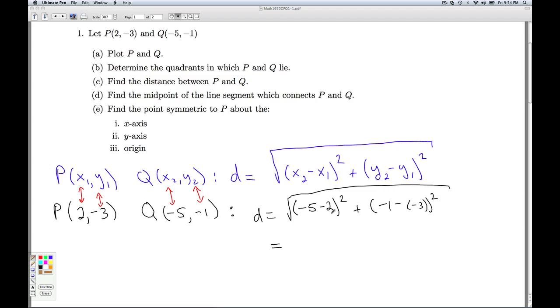So negative 5 minus 2 gives us negative 7. Negative 1 minus a negative 3 is the same as negative 1 plus 3, which is a positive 2. Negative 7 squared is 49. 2 squared is 4. So for our grand final answer, we get D is the square root of 53. So that then finds the distance between P and Q.